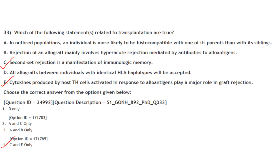In outbred populations, an individual is more likely to be histocompatible with one of its parents than with its sibling. Outbred means bred from parents not closely related. The offspring of heterozygous parents inherit one MHC haplotype from each parent and will express some molecules that differ from those of each parent, meaning parents and offspring are histocompatible.